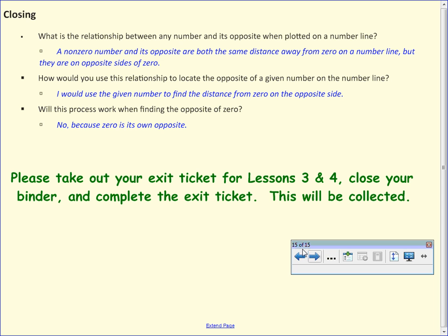So to bring it all together, the relationship between any number and its opposite when plotted on a number line is what? Exactly. Same distance away from 0 but on opposite sides. How would you use this relationship to locate the opposite on a number line? So if you know that 1 is 10 spaces away from 0, how would you find its opposite? You would go 10 spaces in the other direction. What about finding the opposite of 0? What did we say the opposite of 0 was, everybody? 0. That's right. Okay. All right. This is great.